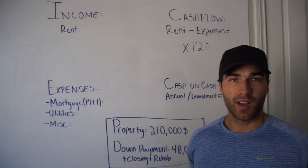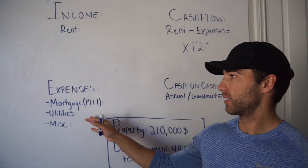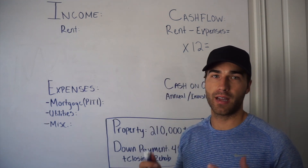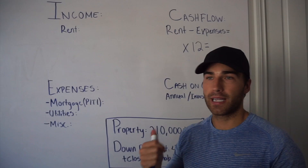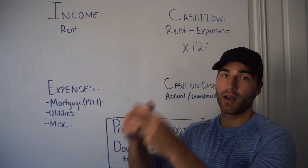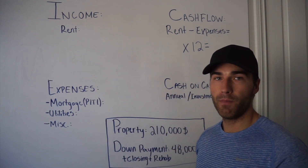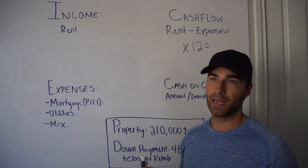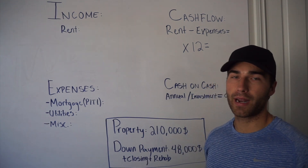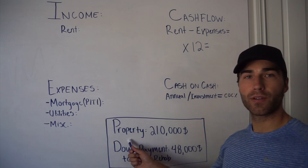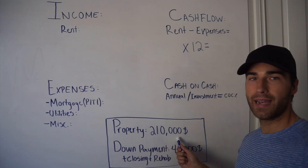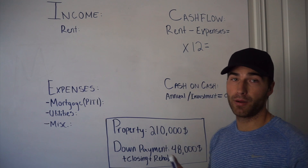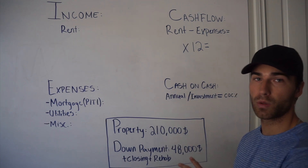This is the first time I'm using a whiteboard on this channel, so I hope it works out. I basically broke down sections for you guys — this is how I analyze a rental property, before you actually put an offer on it to make sure it's a good deal. At the end of the day you want to figure out how much money you're going to make based on your investment. For this example I'm using one of my properties. The purchase price is $210,000, and the down payment, closing costs, and rehab — how much money I put in — is just about $48,000.